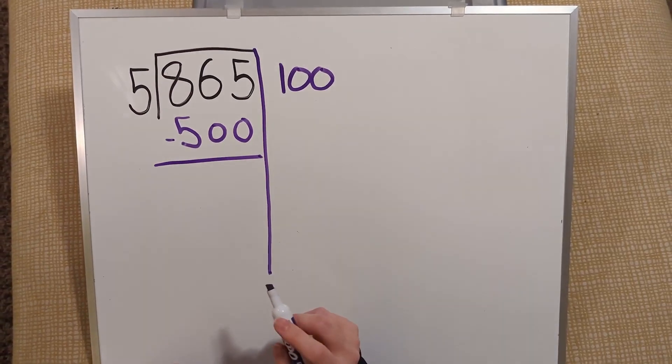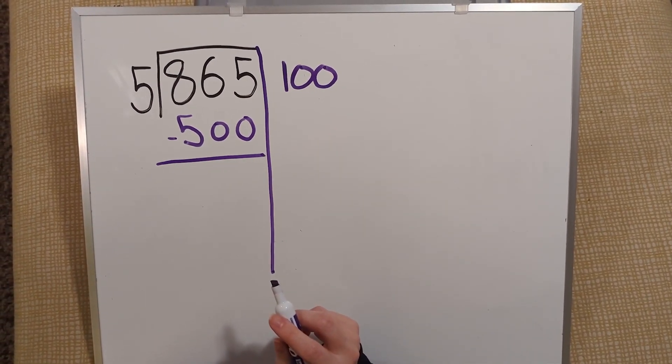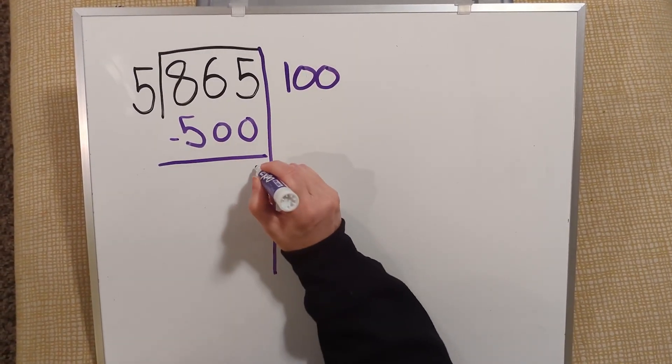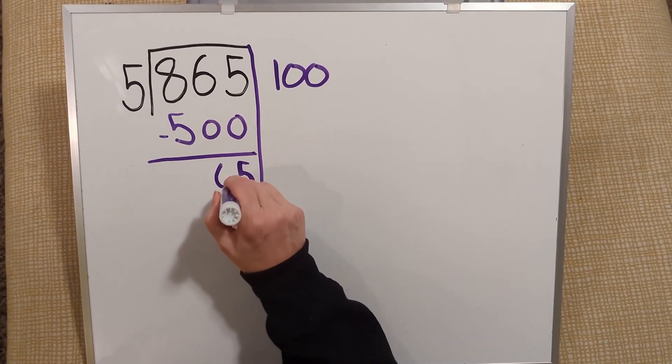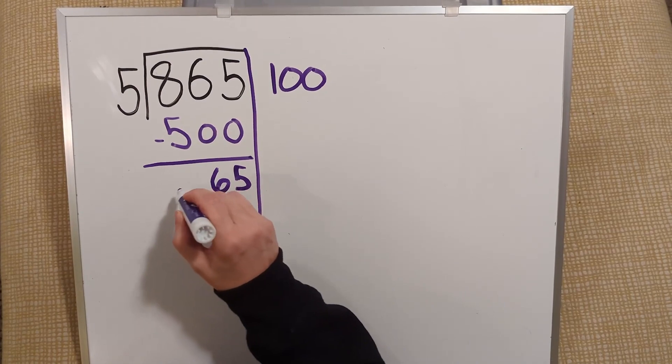I subtract 500 off 865. 5 minus 0 is 5. 6 minus 0 is 6. And 8 minus 5 is 3.